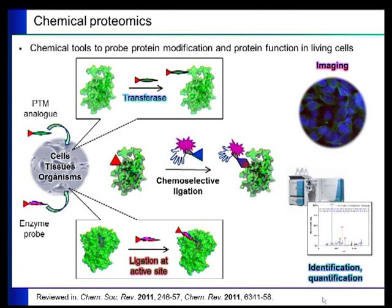Alternatively, we can use enzyme probes that will ligate directly to the active site of an enzyme irreversibly, and also introduce tags into the target proteins. With these tags in place, we can do what we call a chemoselective ligation reaction — a reaction that's unaffected by all of the other components of the cell, and reacts specifically only with the introduced tag. That gives us access to a large number of handles, allowing us to do things like imaging or identification and quantification by, for example, mass spectrometry.